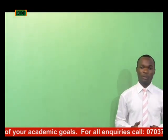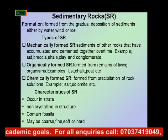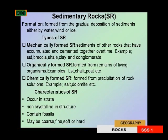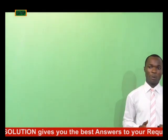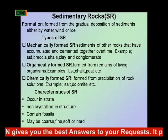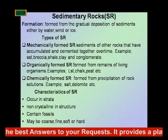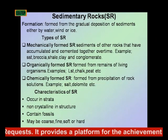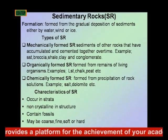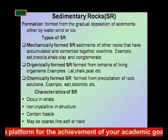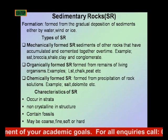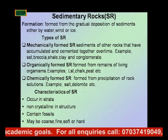There are types of sedimentary rock. One is the mechanically formed sedimentary rock. The mechanically formed sedimentary rock is a type formed from fragments of other rocks that have accumulated and cemented together over time. Examples include sandstone, breccia, shale, clay, and conglomerate.